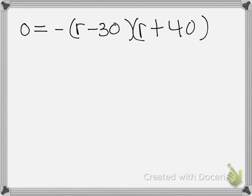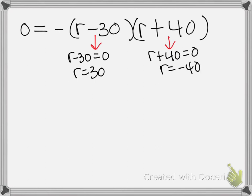So that gives us R minus 30 and R plus 40. So because of the zero product property, we will get two solutions.